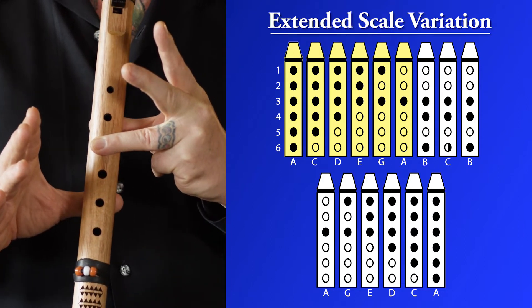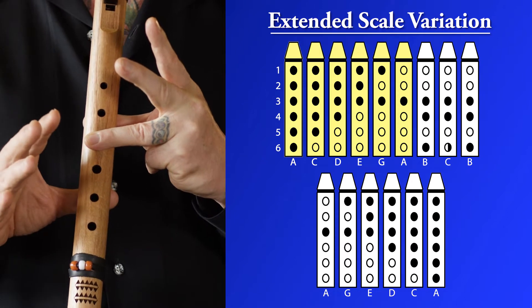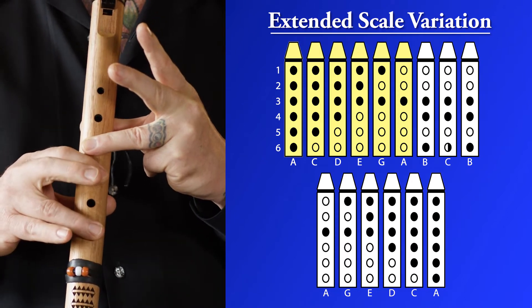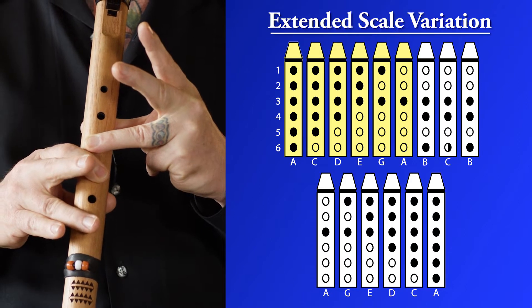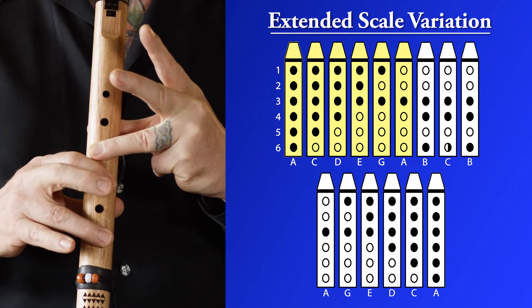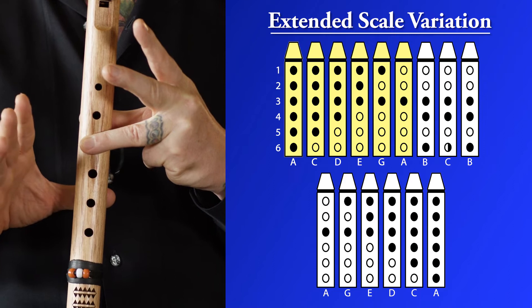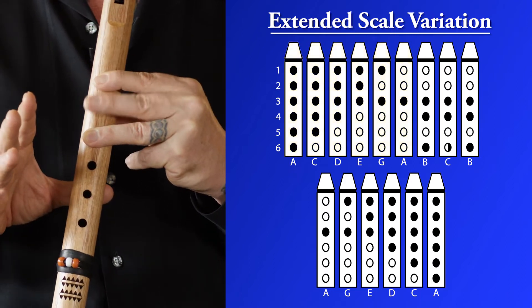But with the extended scale variation, we add three, four, six, and then three, four, half a six, and then cover, and open, and then we go back down.